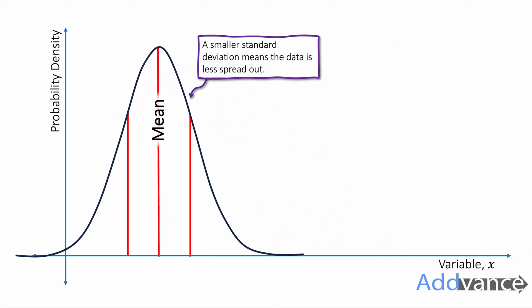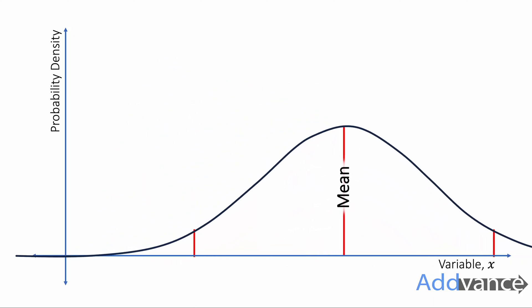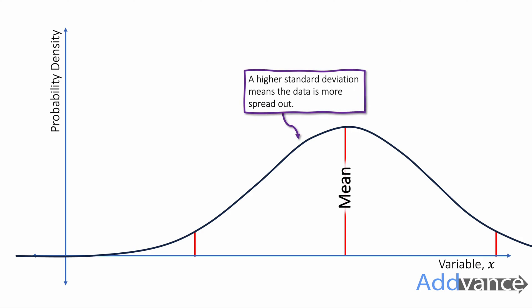Now if the standard deviation is smaller it means the data is less spread out. Whereas if you've got a bigger standard deviation it's far more spread out.